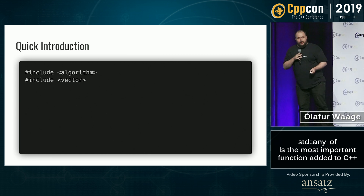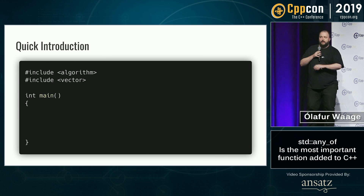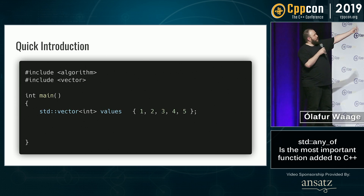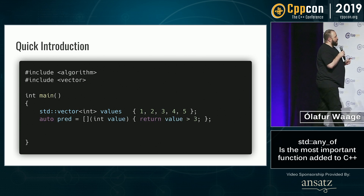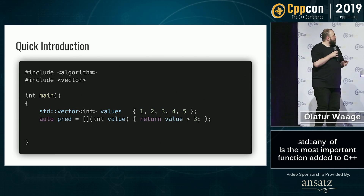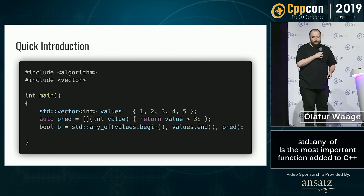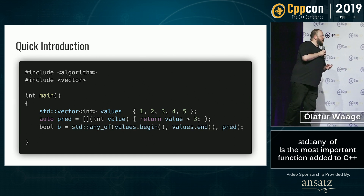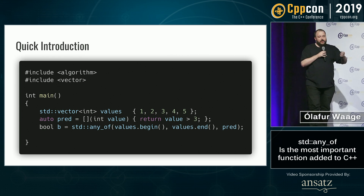Quick introduction to std::any_of. You have this wonderful include, you have this wonderful main, you create a wonderful vector — that's how you create vectors. Then you can create a lambda predicate asking if any value is bigger than three, send it in to std::any_of, give it value begin and end, give it the predicate, and you're on your way.